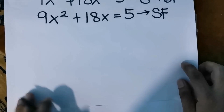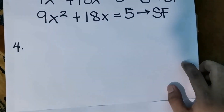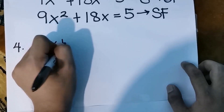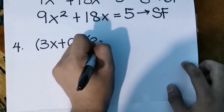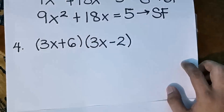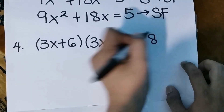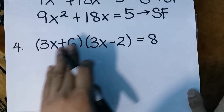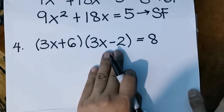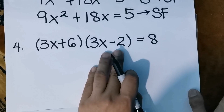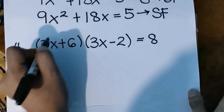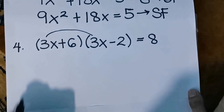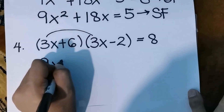Let's have our last example, number 4: 3x plus 6 times 3x minus 2 equals to 8. We notice this is a binomial multiplied by a binomial, so we can use the FOIL method — First, Outer, Inner, and Last terms. Starting with the first terms: 3x times 3x gives 9x squared.